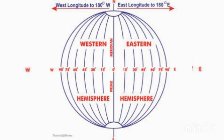The prime meridian and 180 degree meridian divide the earth into two equal halves — the eastern hemisphere and the western hemisphere. Therefore the longitude of a place is followed by the letter E for east and W for west. From this figure we can identify that the prime meridian divides the earth into two equal halves: the western hemisphere and the eastern hemisphere.